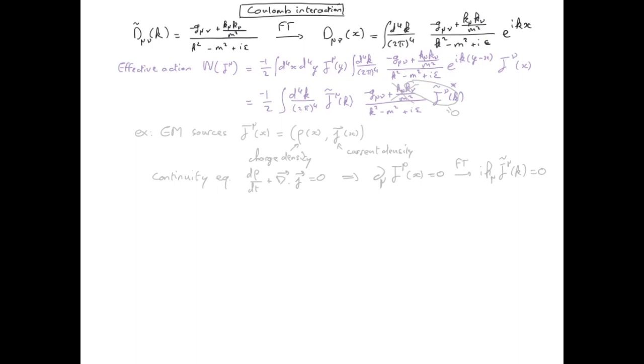Therefore I can get rid of my term which has a division by m squared. And that means now that I can get rid of this term, I can safely take the limit where the mass goes to zero, which corresponds to electromagnetism with a massless photon.